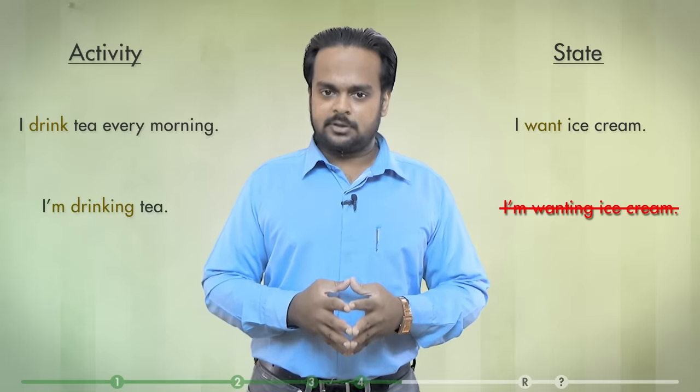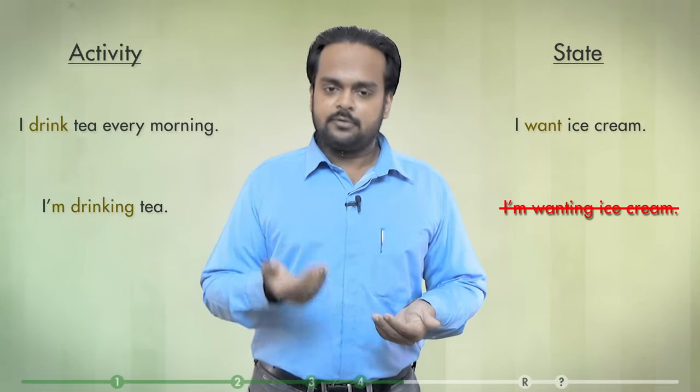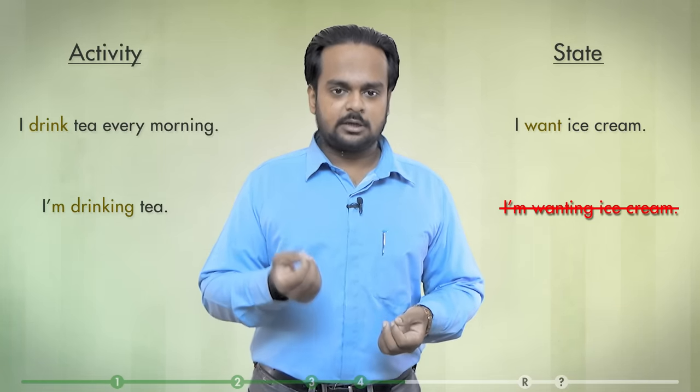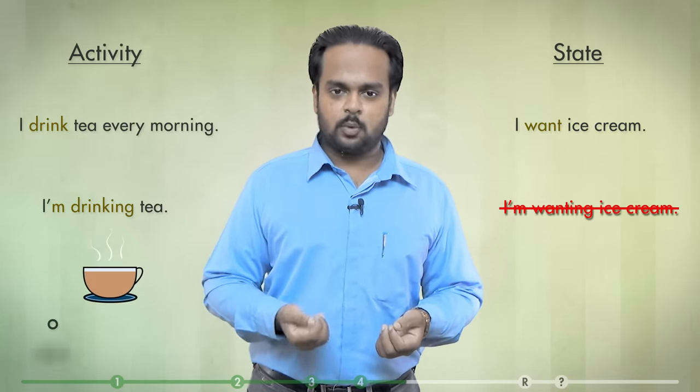Well, to understand why that is, you need to know the difference between activities and states. An activity is something that we do physically – it's an action. The verb drink is a real physical action. It starts when I start drinking. It happens continuously – I keep drinking and drinking the tea – and then it finishes. With this type of verb, you can use both simple and continuous forms. But the verb want is not like that. You don't start and finish wanting. And you cannot do it continuously because it's not an action. So we say that it's a state. We don't normally use state verbs in –ing forms. We use them in the present simple tense.